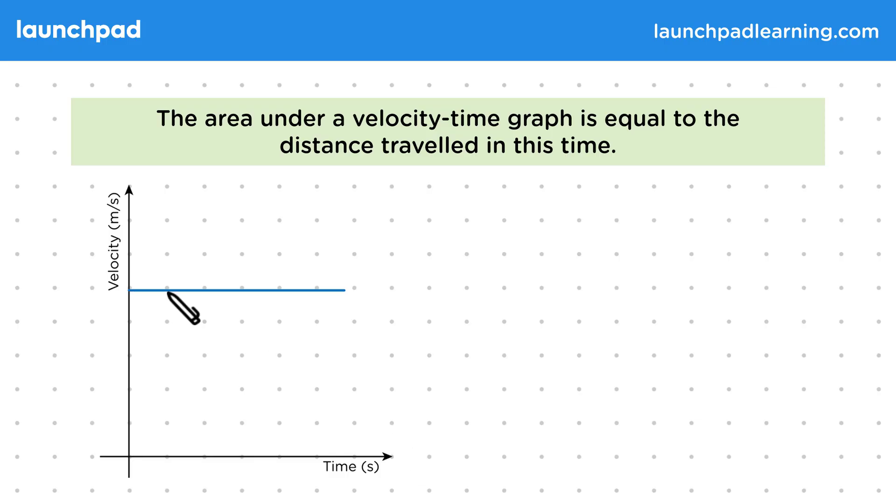In this case the graph is horizontal and has no gradient, therefore there's no acceleration and a constant velocity. Now, why does this area under the graph tell us the distance travelled? In general, that's quite a complicated question to answer, but for this case it's a lot easier.